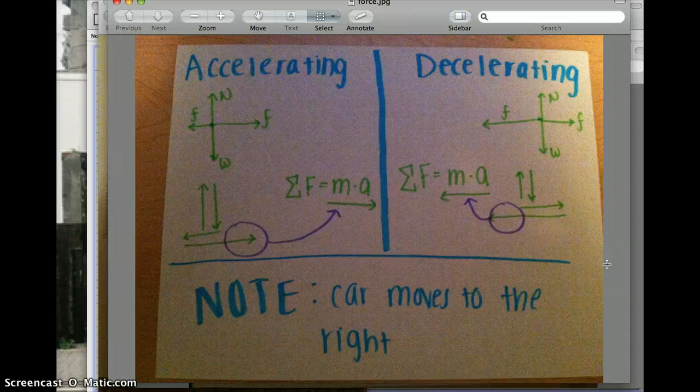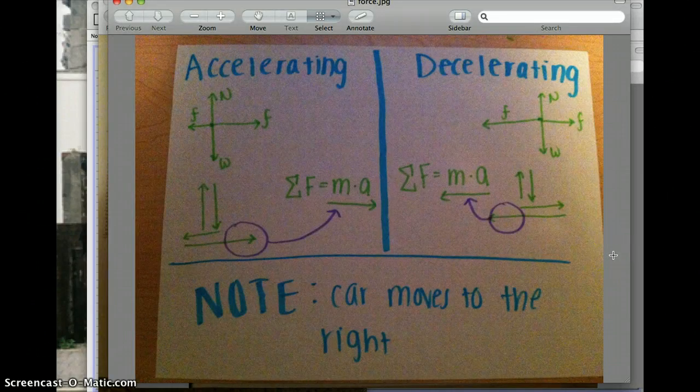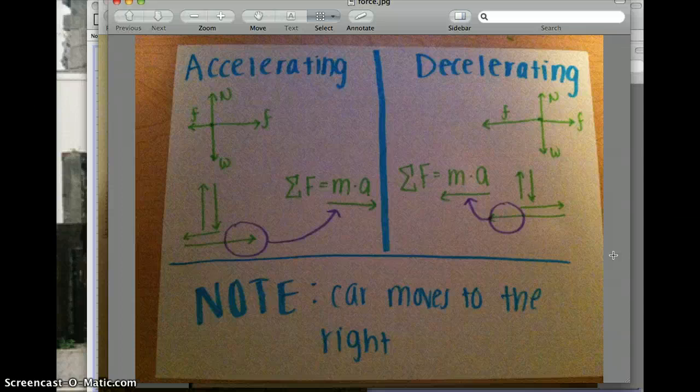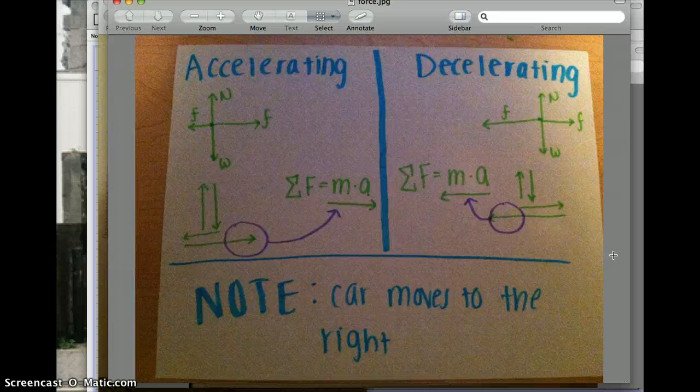Now for the decelerating part, it's pretty much the opposite of the accelerating part. I mean, we still have normal force going up and the weight of the earth going down, but the friction is going to the right this time instead of the left, and the more force is going to the left because it's decelerating rather than accelerating.